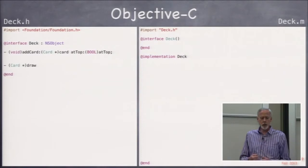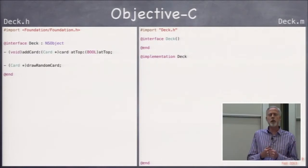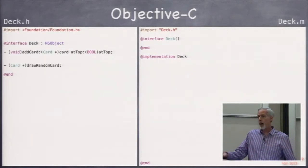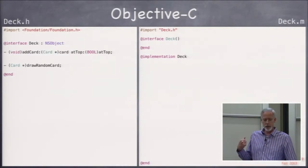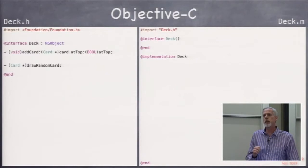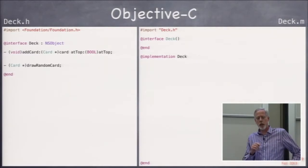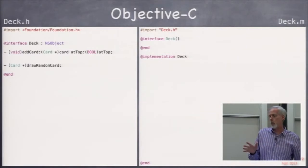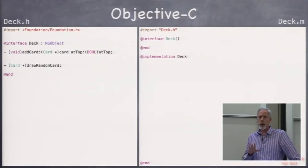The interface for deck is going to have these two fundamental methods. One adds a card to the deck, and one draws a random card out of the deck. The add a card to the deck is a little bit new to you because you can see it has two arguments. This is the first method you've seen that has two arguments.